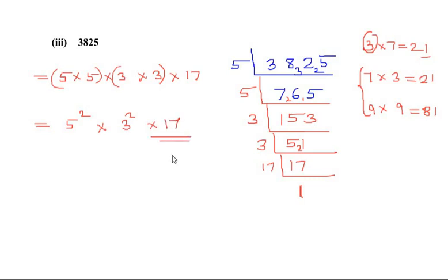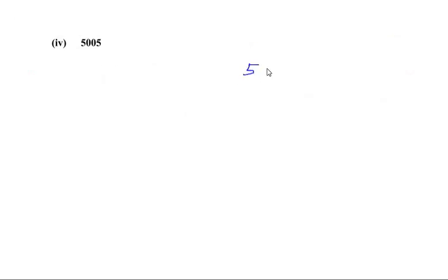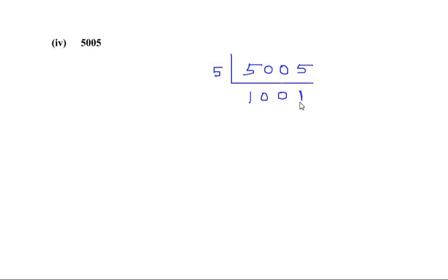Now let us look at the fourth sub-part: 5005. This number ends with 5, so it is definitely divisible by 5. Dividing 5005 by 5 gives us 1001. To identify which number divides 1001, we look at the last digit, which is 1. We need to think about all the prime tables that have a multiple ending in 1.